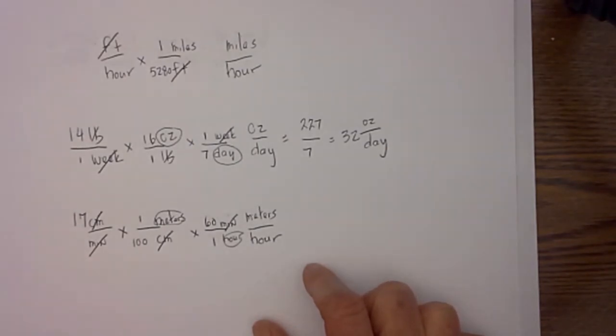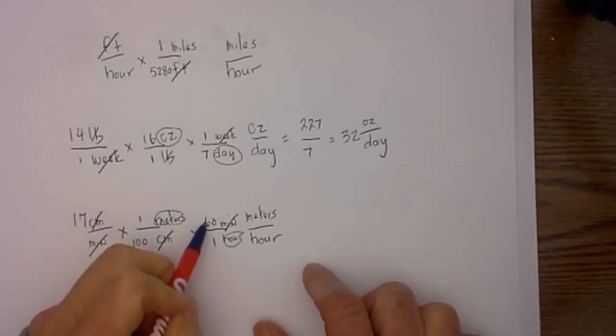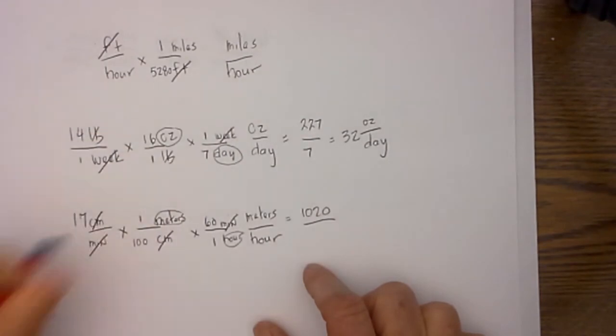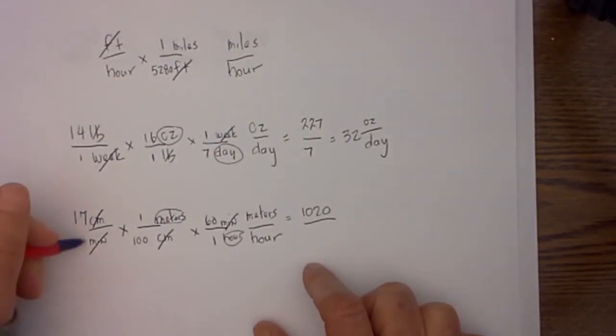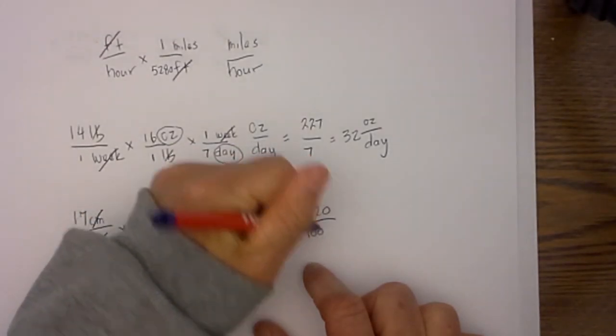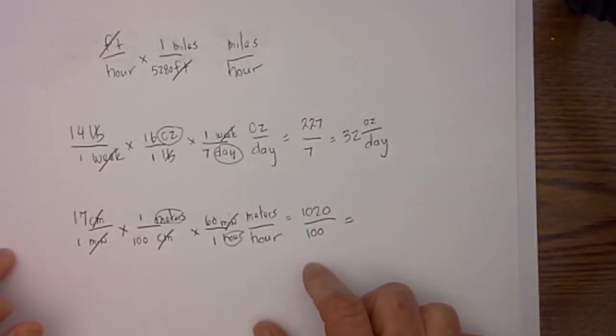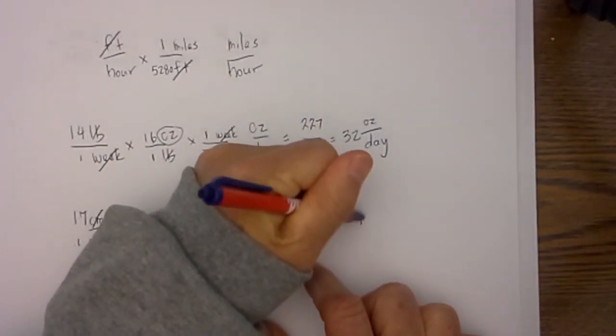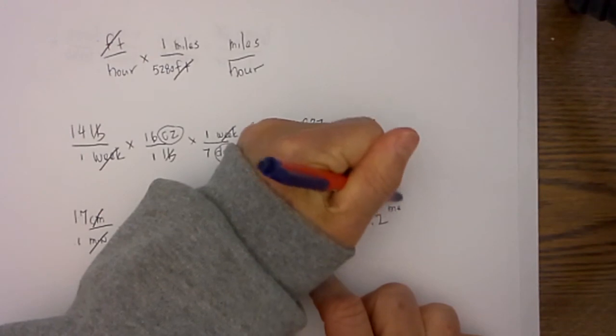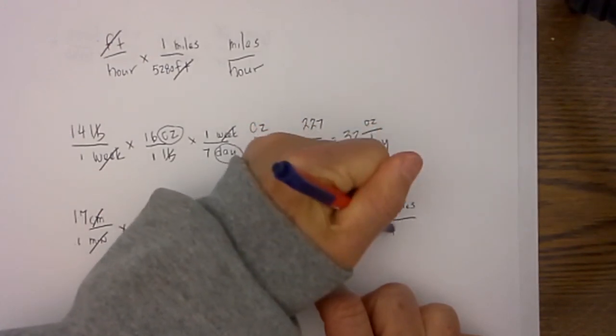So now all we have to do is the math and so what we do is we go 17 times 60 which equals 1020 and then on the bottom we take 1 times 100 times 1 so that is 100 and that will equal 10.2 meters per hour.